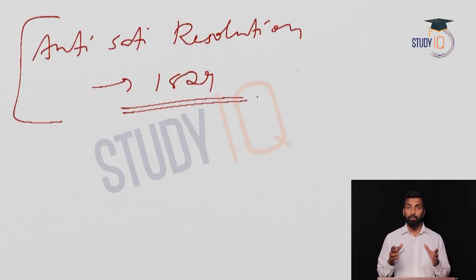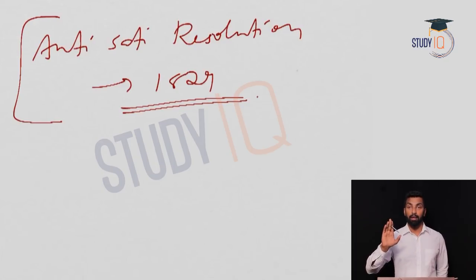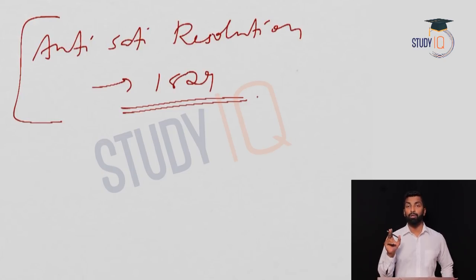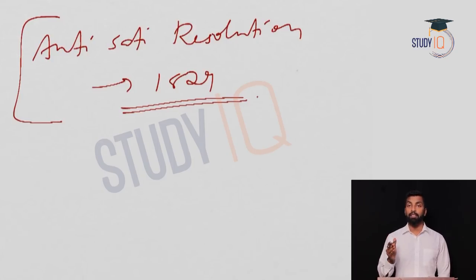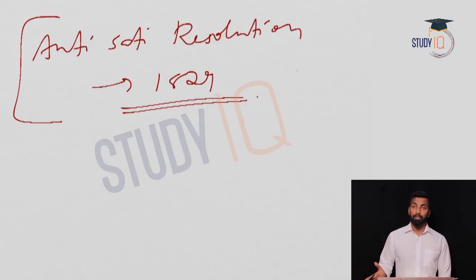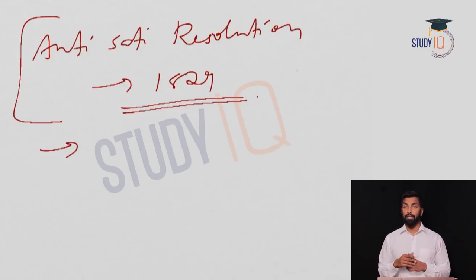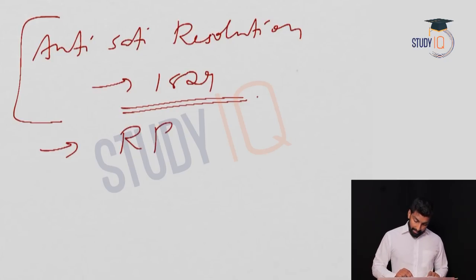Sati was declared as culpable homicide not amounting to murder, and the maximum punishment of 10 years rigorous imprisonment was given for those who force the female to commit suicide. When we discuss the 1857 revolt, one of the most important socio-religious causes is this Anti-Sati Resolution, because the upper-caste Hindu people started thinking that the British were unnecessarily interfering in their religion.